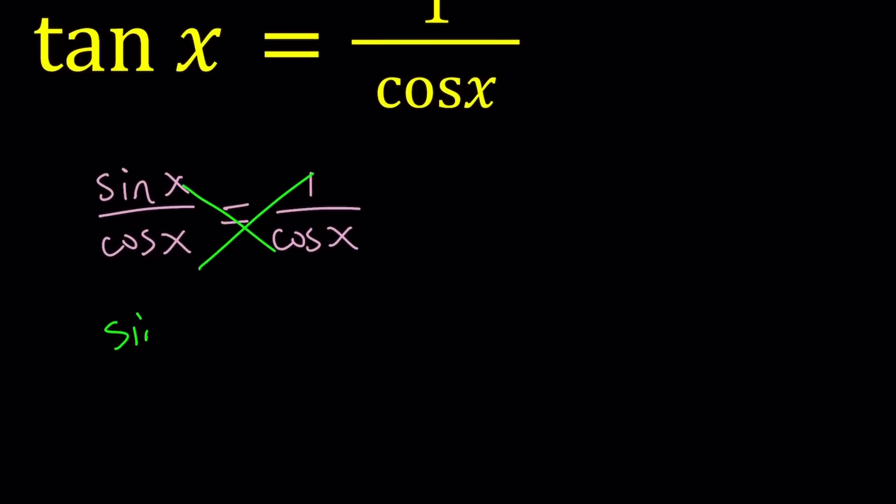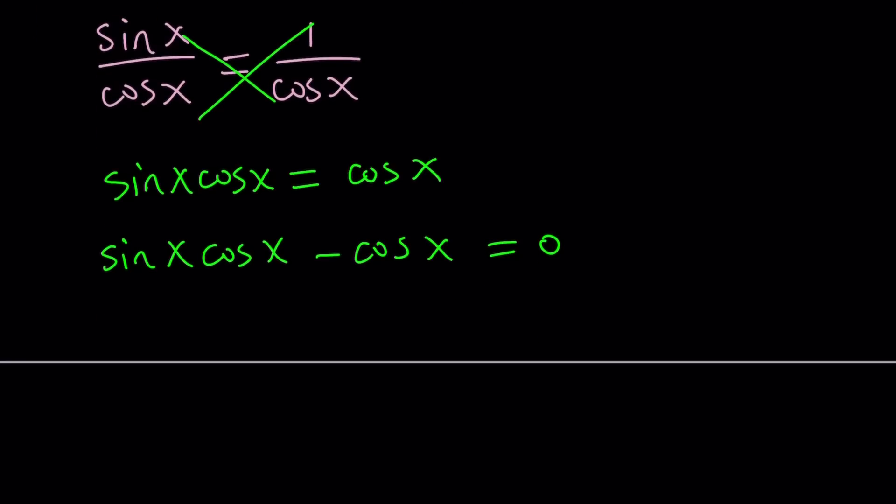And let's go ahead and do it. Sine x times cosine x equals cosine x. So first, we do cross multiplication, and then we're going to put everything on the same side and use factoring. Okay? So let's go ahead and bring the cosine x over here. And now let's go ahead and factor out cosine x here.